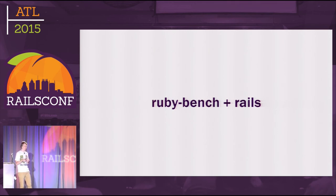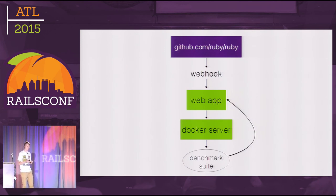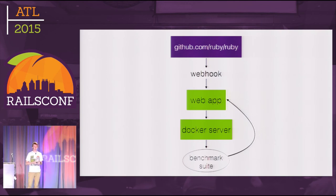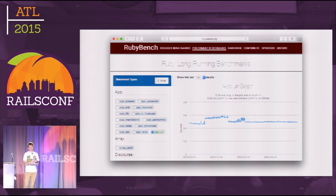Now let's see how it works. On every new commit to a GitHub repo — in this example the Ruby/Ruby repo — GitHub makes a webhook request to our web application. The web application starts a background job with a remote connection to our Docker server, where a Docker container is created with that exact version of Ruby and the benchmark suite for Ruby or Rails, depending on the repo. Right after the benchmark suite finishes, the result is reported back to the web app where we can see the updated chart. The UI of RubyBench lets you choose a benchmark on the sidebar and see the chart on the right — you can zoom it and check out commits.